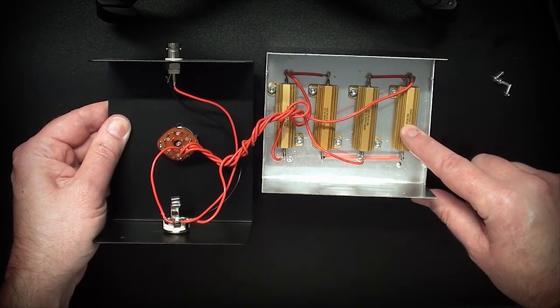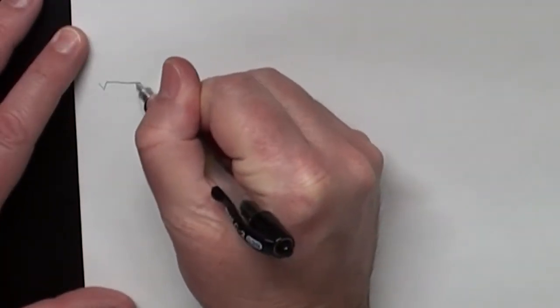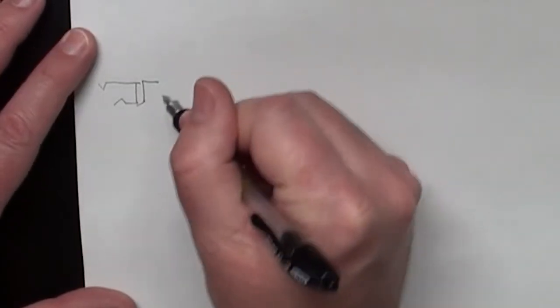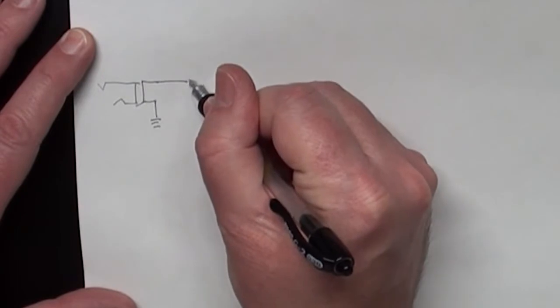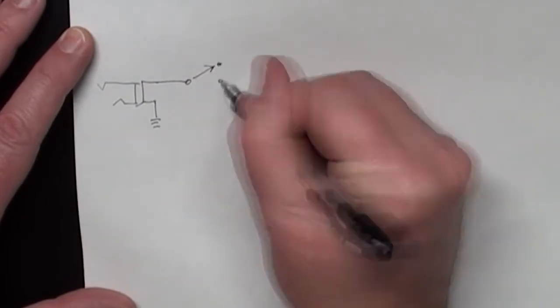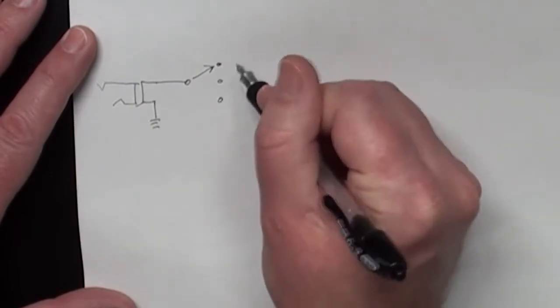So this is the basic circuit. We have the input jack, the hot and the ground. Then the hot goes to the switch, which is a single pole triple throw. This is the 16 ohm, the 8 ohm, and the 4 ohm selection.